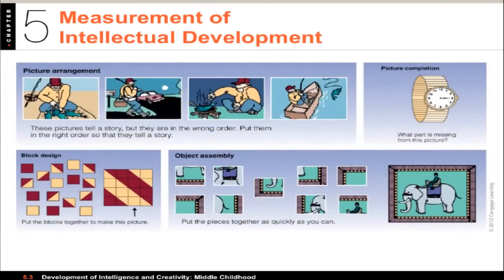The Weschler Scales have test questions grouped into subtests measuring different intellectual tasks. Subtests compare a person's performance on one type of task — such as putting pictures in order to tell a coherent story, identifying what's missing in a watch, or arranging blocks — with another, such as defining words or using blocks to construct geometric designs. These scales suggest children's strengths and weaknesses in different areas, as well as provide overall measures of intellectual functioning.